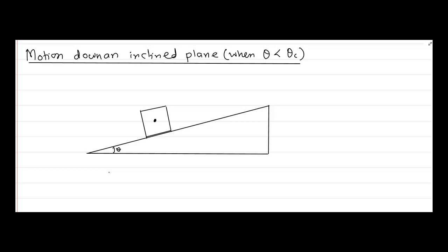When the object is in this position, we analyze the various forces that come into play. One force is Mg acting in the downward direction — the weight of the block. We then have a component perpendicular to the inclined plane and a horizontal component which is responsible for taking the block down the inclined plane.